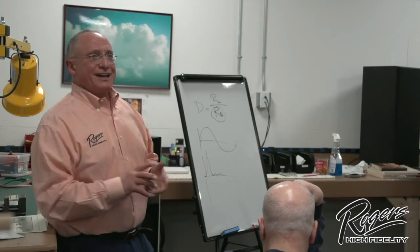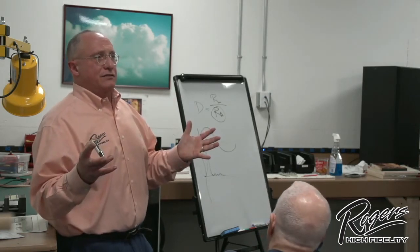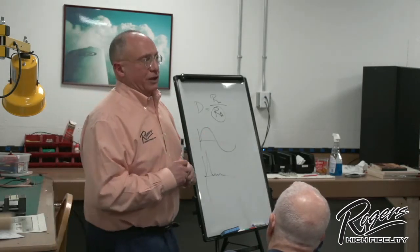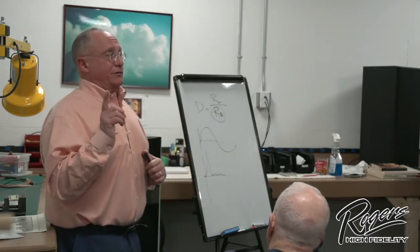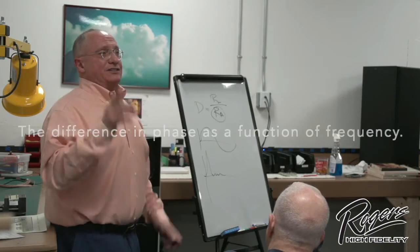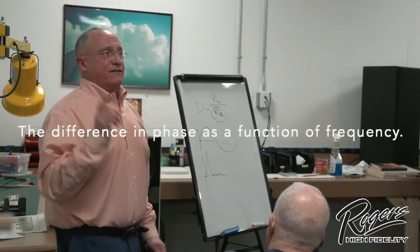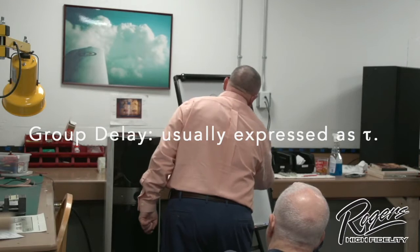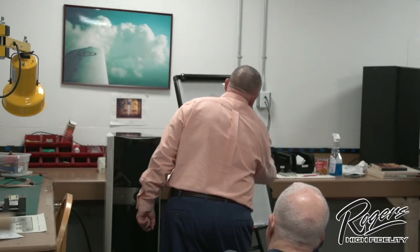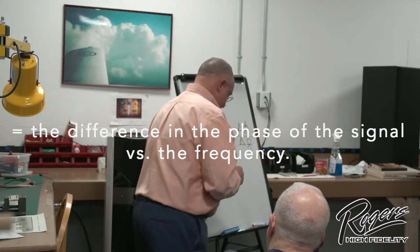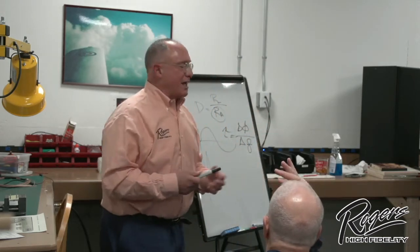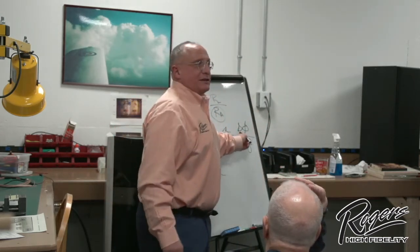We design our amplifiers for group delay. Does everybody know what group delay is? From a mathematical standpoint, let's start where everybody's eyes glaze over: it's the difference in phase as a function of frequency. So group delay, which is usually expressed as tau, is the difference in the phase of the signal versus the frequency.